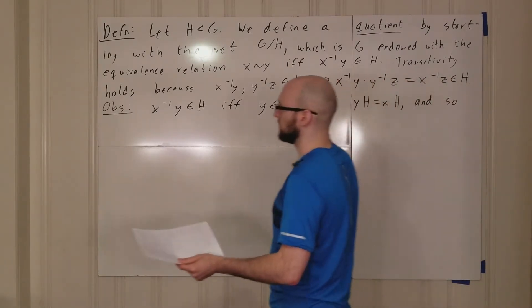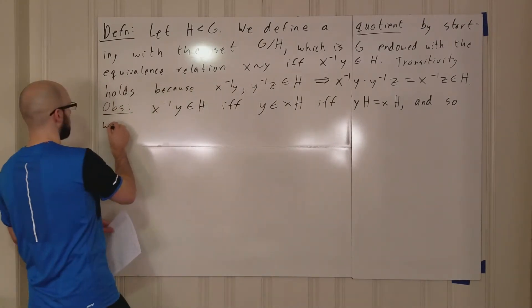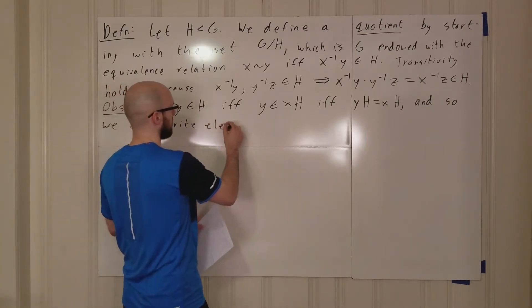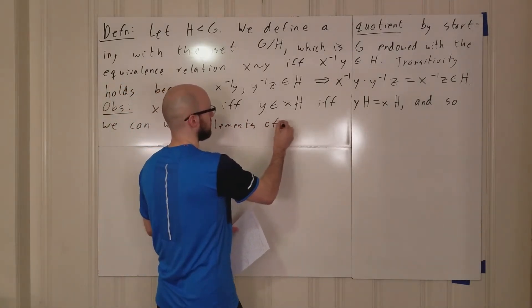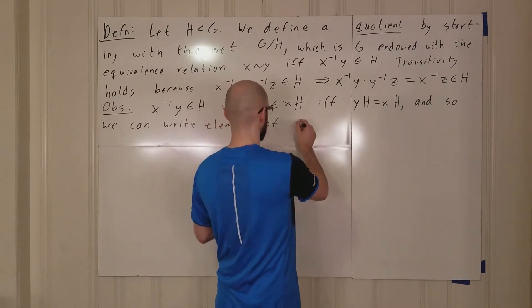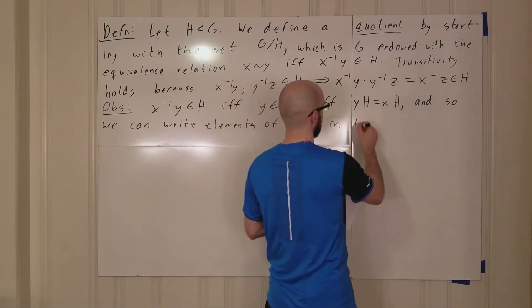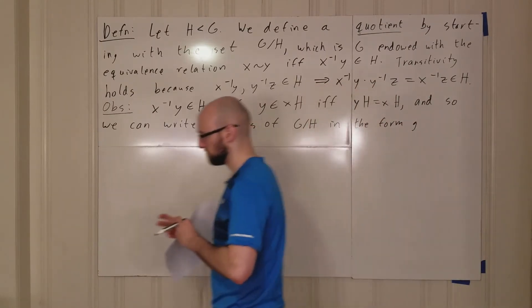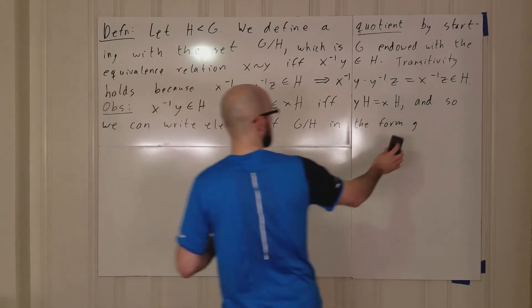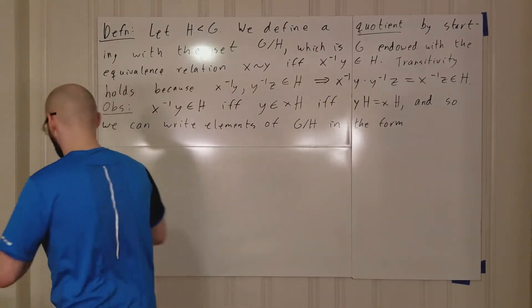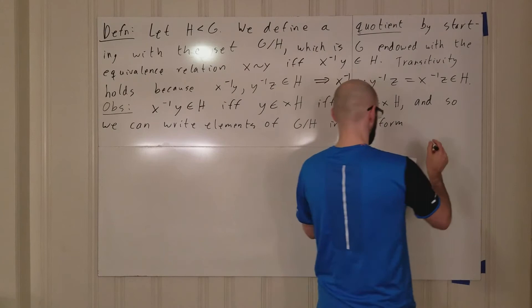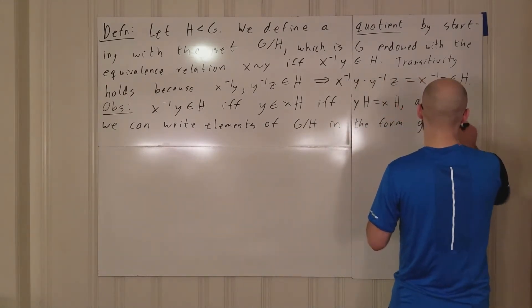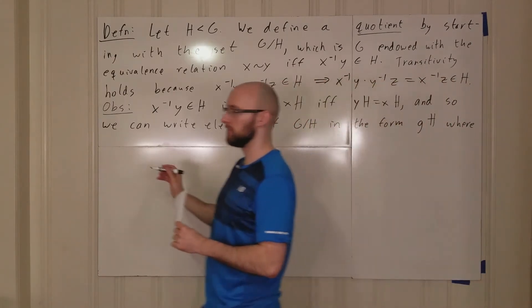So what this means is we can write elements of G mod H in the form g times H, where of course little g is in big G.